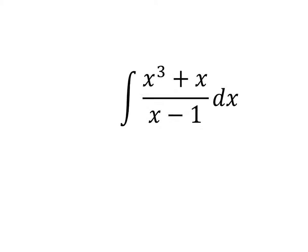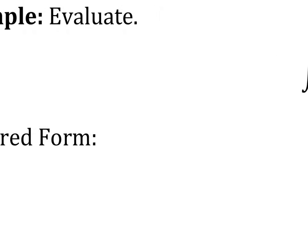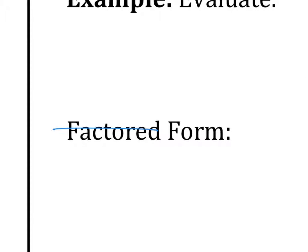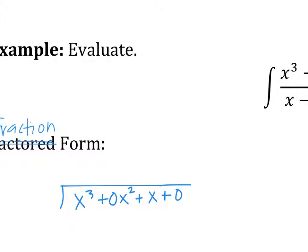So let's remind you how to do long division. We're going to put this in fraction form. The numerator goes in, and what you want to do is put a space holder for anything that is non-existent. For example, there is no X squared, so you put a 0X squared, and then plus X. And then you can put a plus 0 for the constant, divided by the denominator, X minus 1.